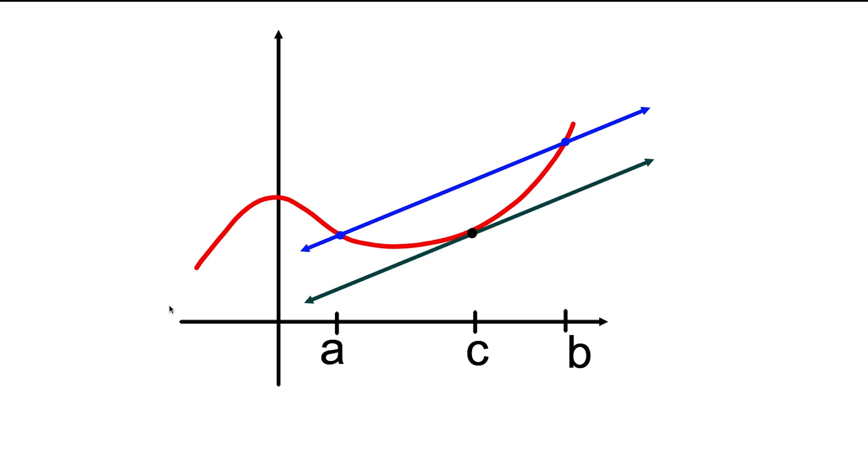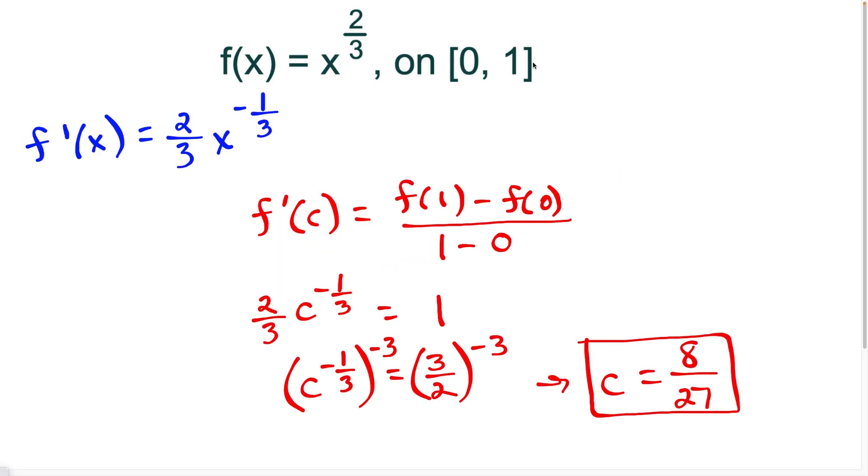The next thing you should be able to do is draw out the mean value theorem. Showing here that if I have a continuous and differentiable function, that at some point C between A and B, the slope of the tangent line is going to be equal to the slope of the secant line. And then the next thing you should be able to do is apply the mean value theorem to a question like this in the multiple choice section.